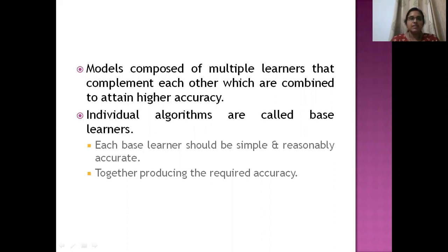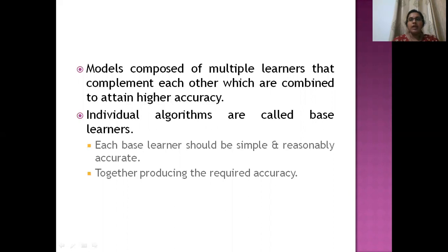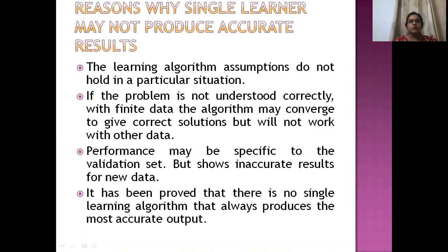These models are composed of multiple learners that complement each other, which are combined to attain higher accuracy. The individual algorithms are called base learners. Each base learner is simple and reasonably accurate, and together they produce the required accuracy.